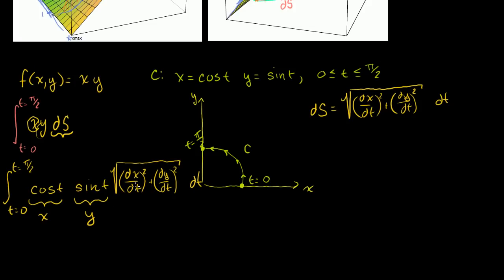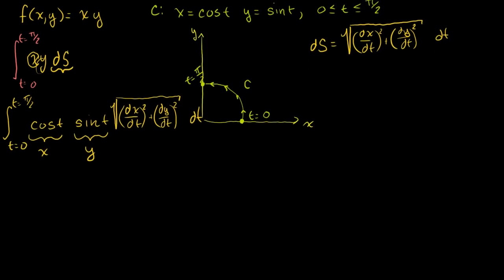It's very easy to find the derivative of x with respect to t and the derivative of y with respect to t. The derivative of cosine of t is minus sine of t. And the derivative of y with respect to t — the derivative of sine of anything is the cosine of that anything — so it's cosine of t. We can substitute these back into the equation.